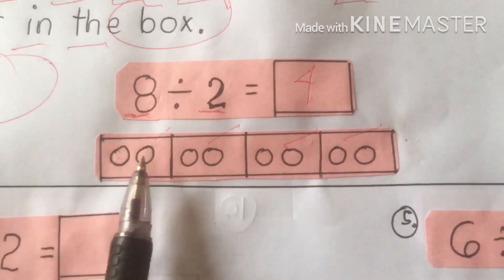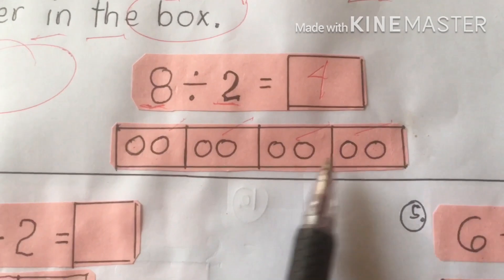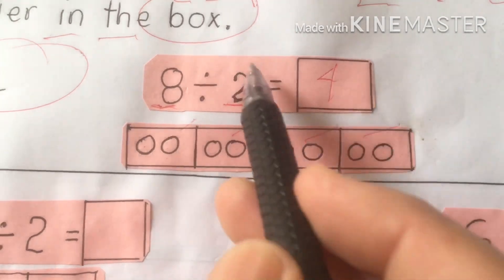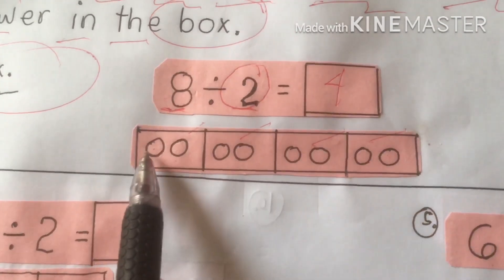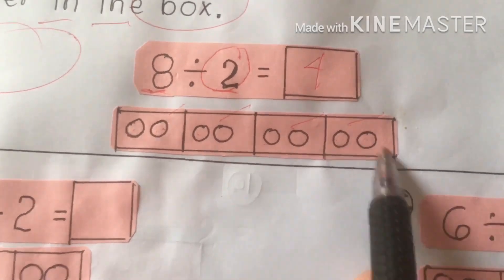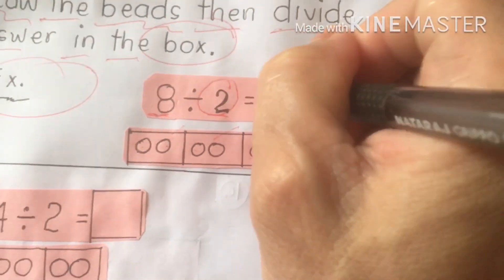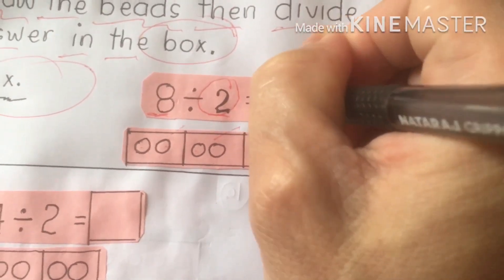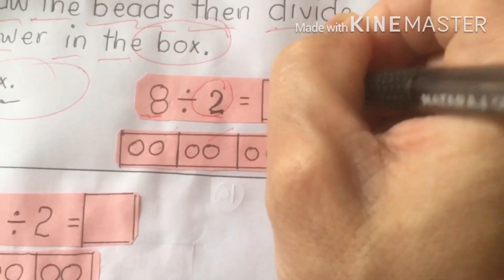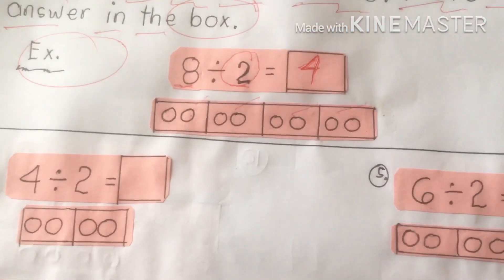For example, I draw 8 beads: 1, 2, 3, 4, 5, 6, 7, 8. I group them by 2s: 1–2, 1–2, 1–2, 1–2. So we have 4 groups here. The answer is 4.